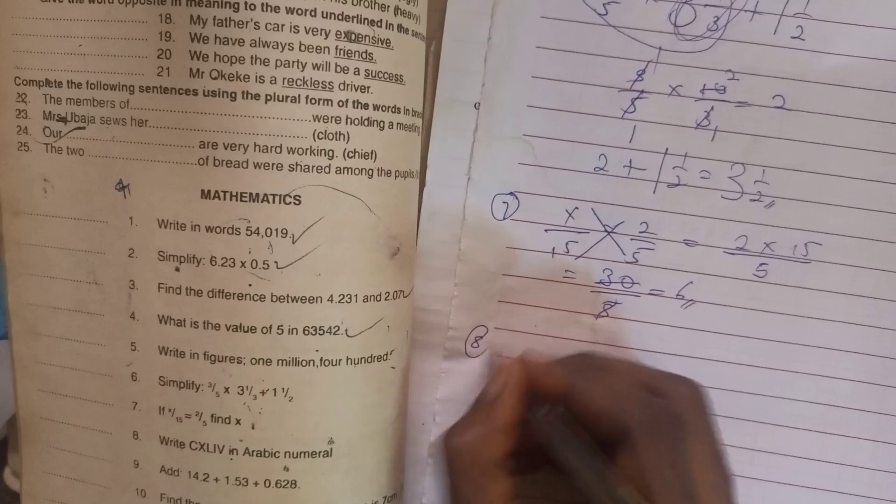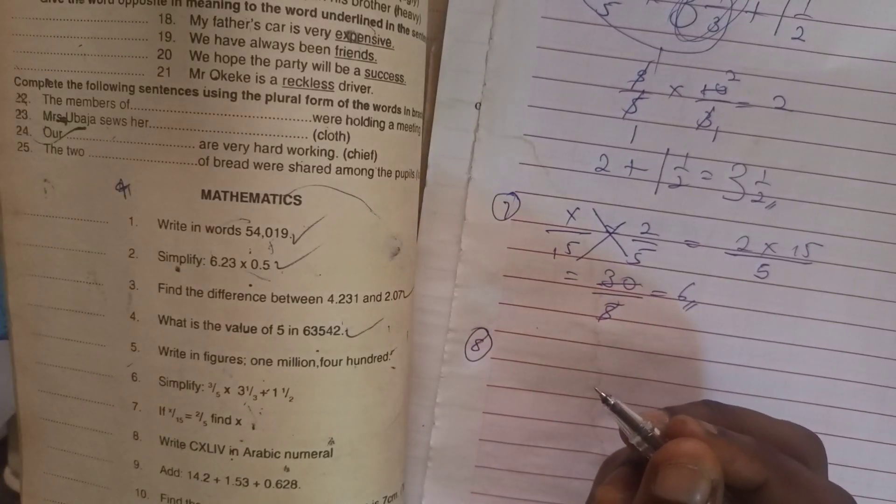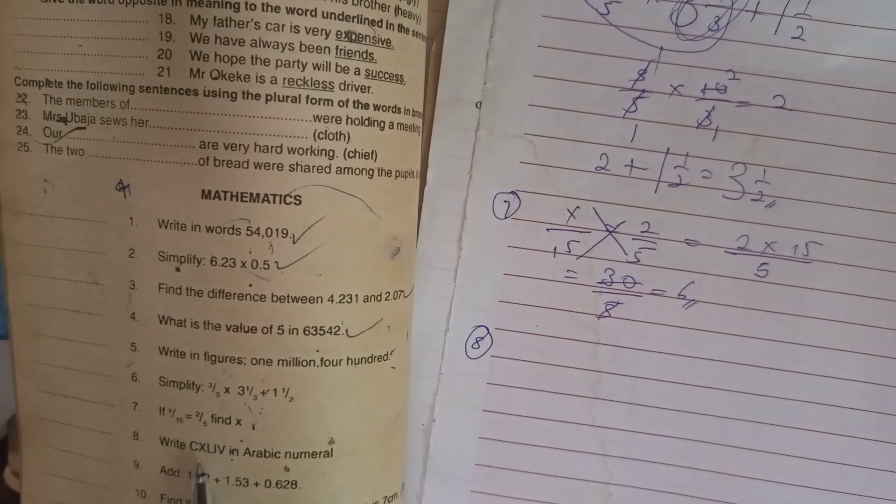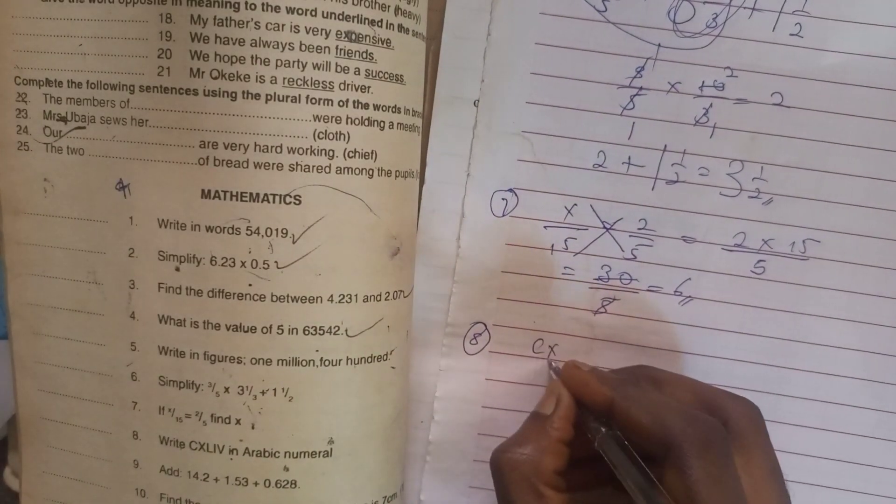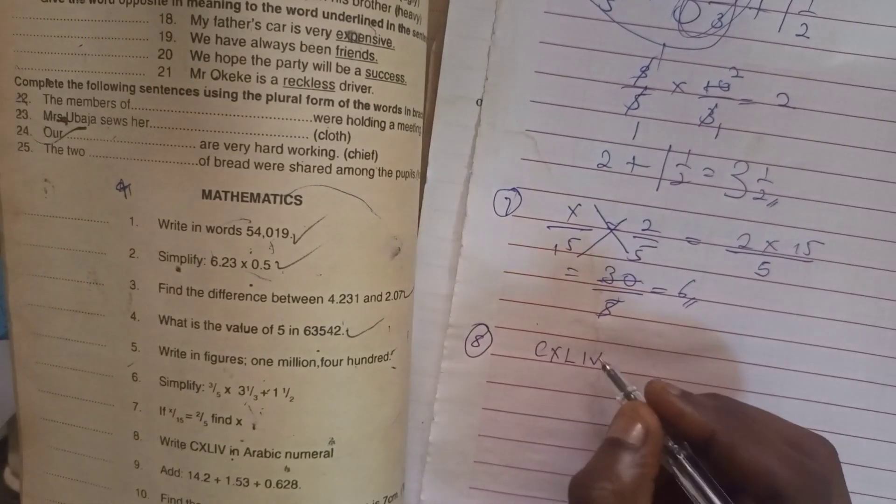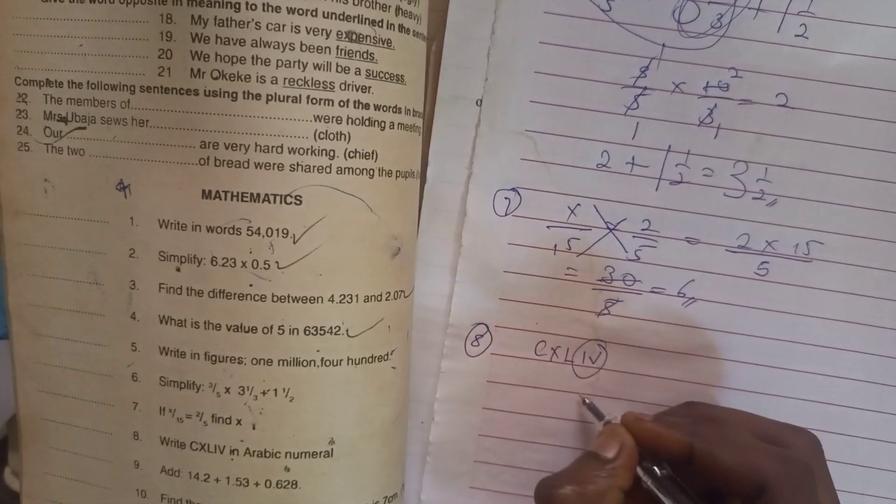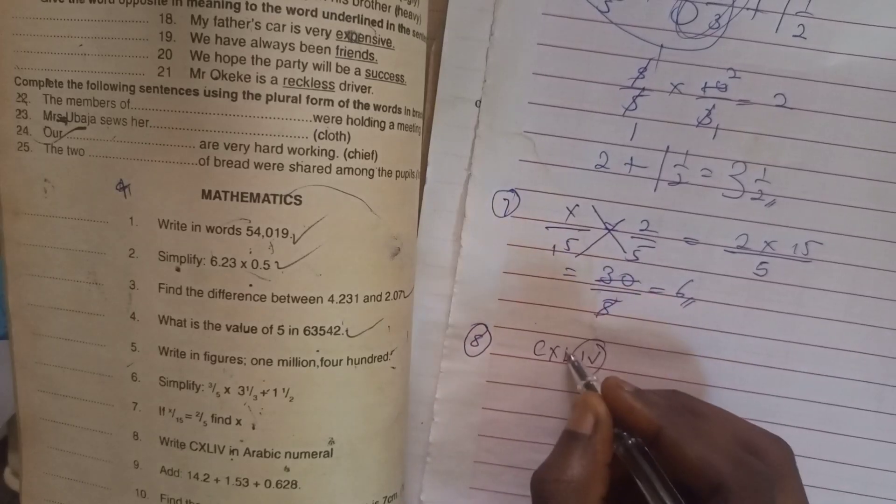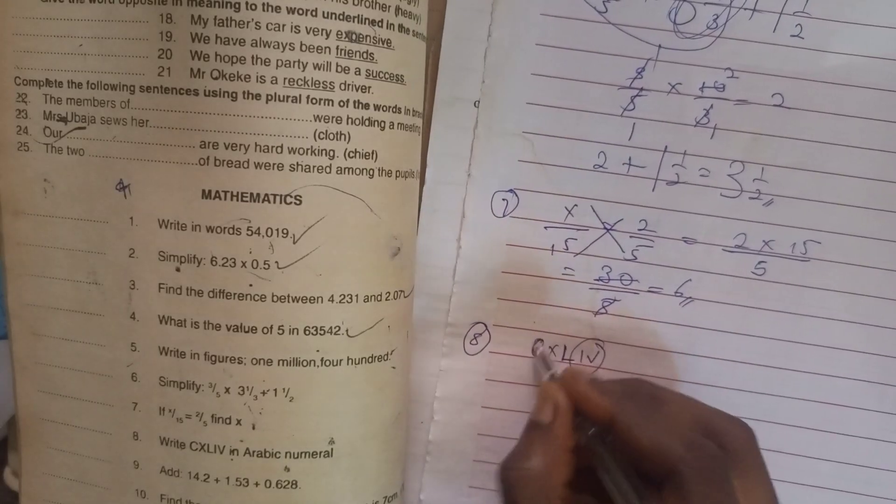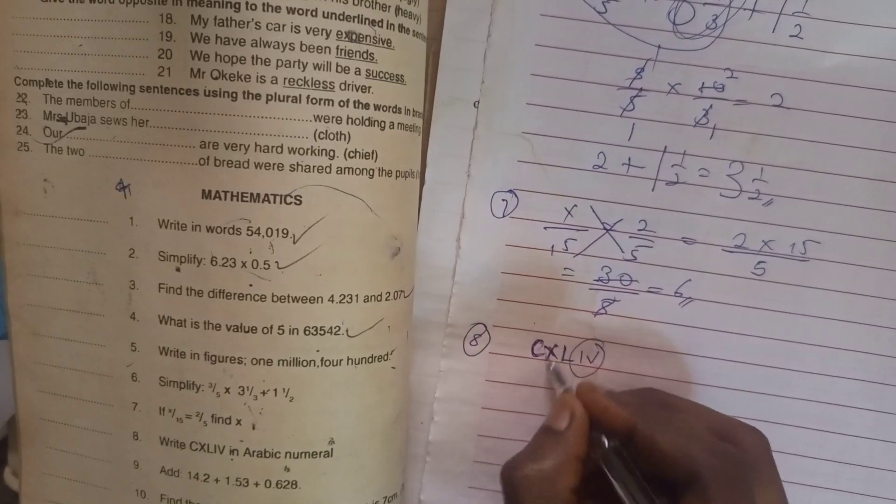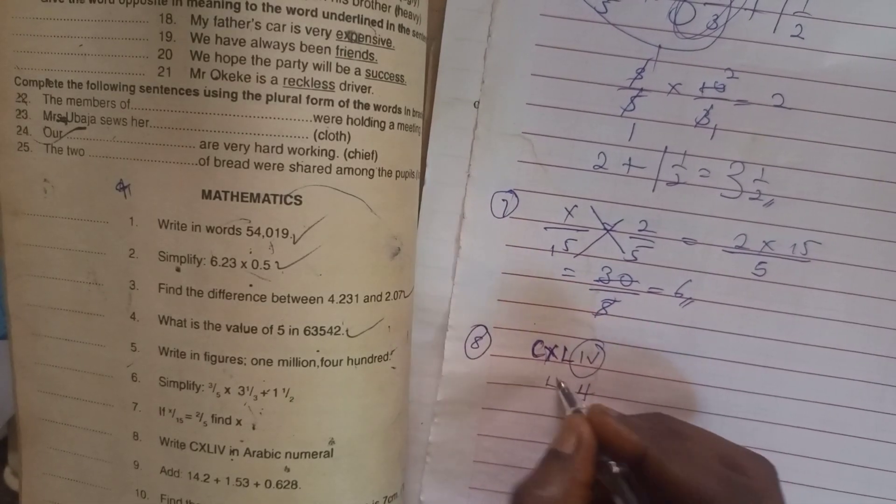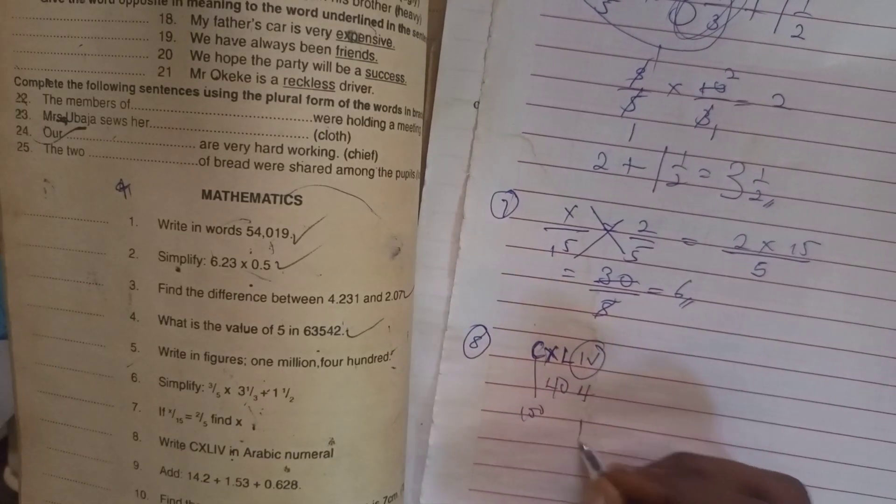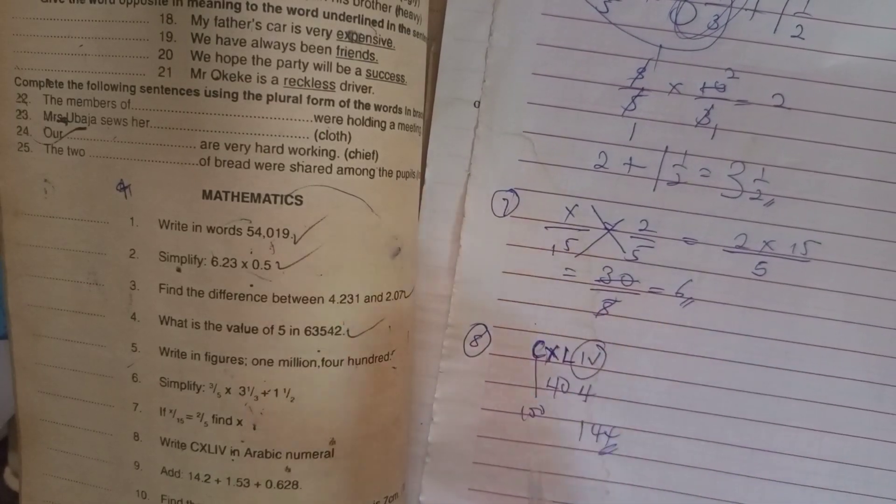So the next one is number 8. Number 8 says write CXLIV in Arabic numeral. So CXLIV. What to do here is IV is 4, XL is 40, and C is 100. So we have 144. That's our answer.